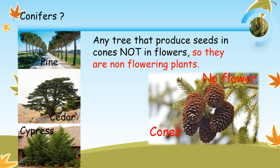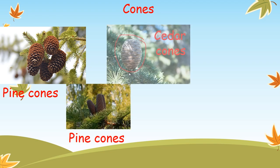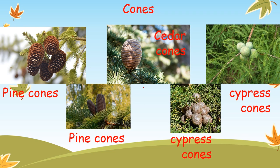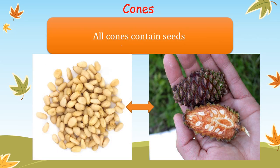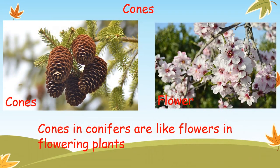There are different types and kinds of cones according to the trees they come from. These are the pine, cedar, and cypress cones — you can see they are different from each other. All cones contain seeds, so the seeds of the pine and all conifer trees are located inside the cones. The cones in conifers are like flowers in the flowering plant.